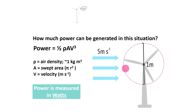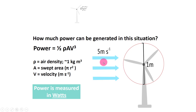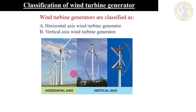The swept area A is the blade size sweeping a complete circle — π r². For example, if the radius is 5 meters, we can calculate π r² easily. Wind turbine classifications include horizontal axis and vertical axis types.